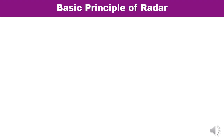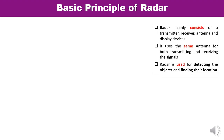Now let us understand the basic principle of radar. Any radar system consists of four major components: transmitter, receiver, antenna, and the display device. In the case of radar, a single antenna can be used for both transmitting and receiving the signal. For using a single antenna, there is a device known as a duplexer. Since radar is used for detecting objects and finding their location, let us draw a simplified diagram.